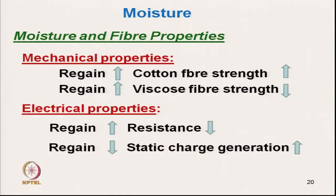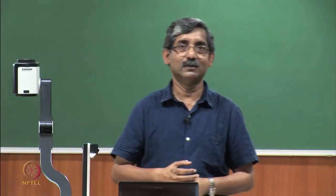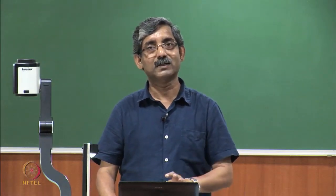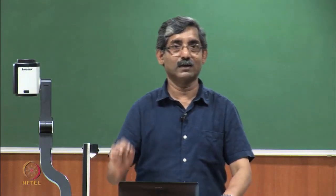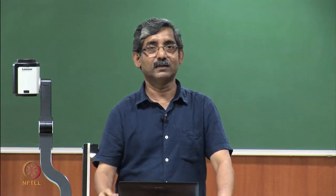As far as mechanical properties are concerned, cotton is an example where with moisture regain the strength of the fibre increases. But for most other fibres, the mechanical properties — specifically strength — reduce with increase in moisture regain content inside the fibre.